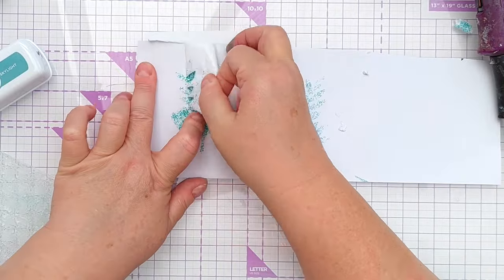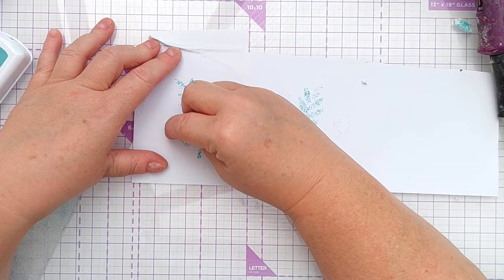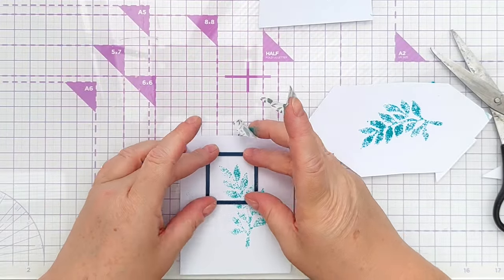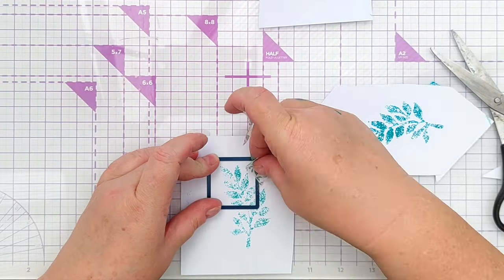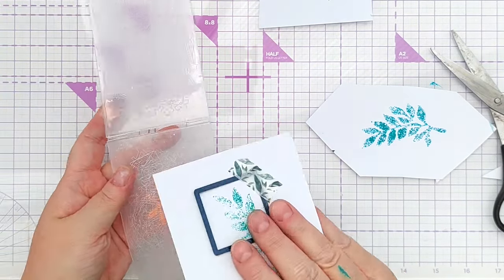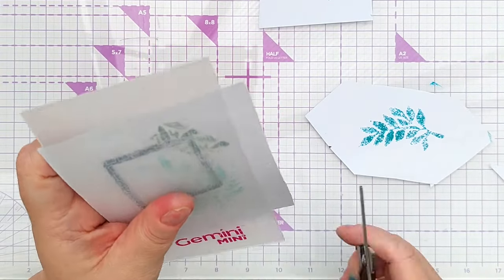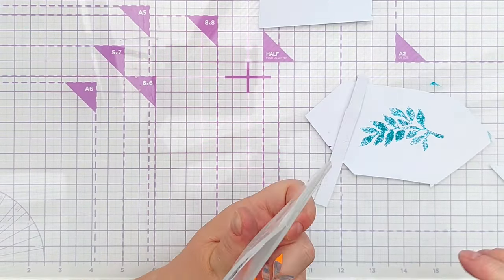In the end I made three leafy branchy stenciled images which I then die cut using this small plain square die because my idea was to have three leafy branchy textural square pieces running down the left hand side of my card.